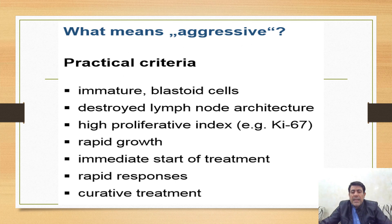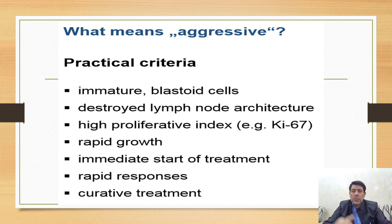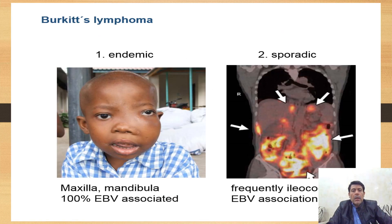Aggressive Non-Hodgkin lymphoma is characterized by a high number of immature blastoid cells that destroy the architecture of lymph nodes, with a high proliferation index and rapid growth. When these features are present, rapid treatment is needed to stop proliferation and prevent further lymph node destruction. One of the most aggressive types is Burkitt lymphoma, which exists in sporadic and endemic forms.